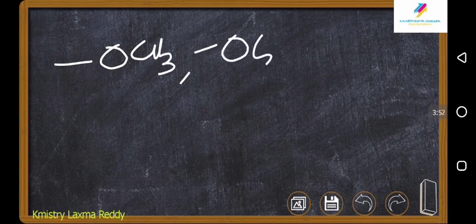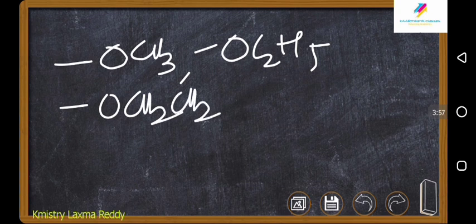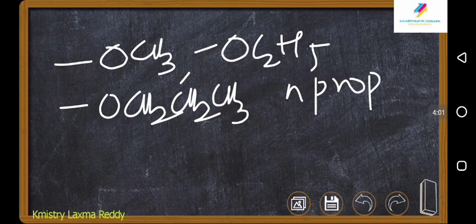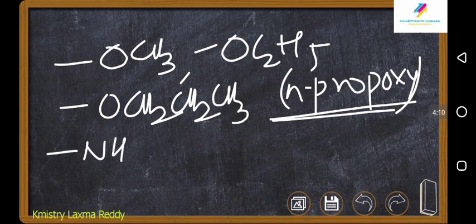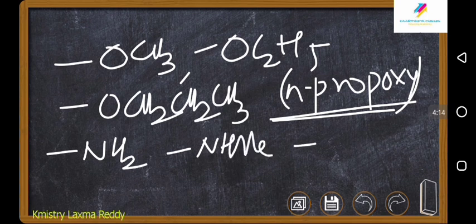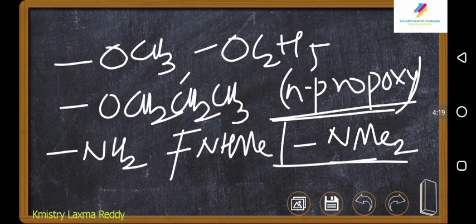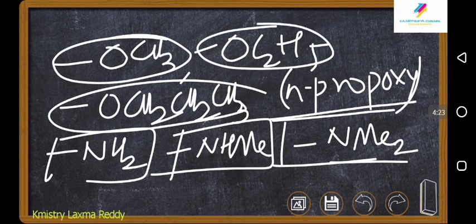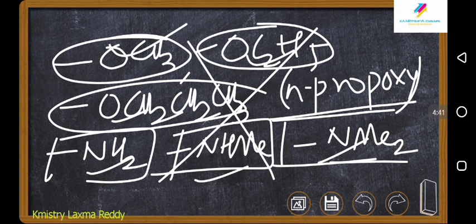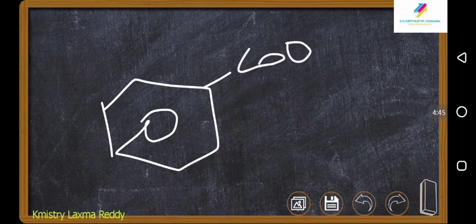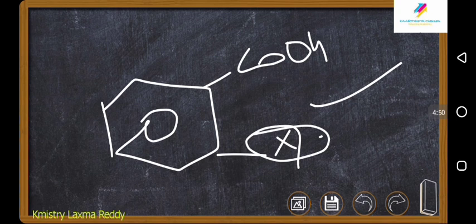So this is the ortho effect. Remember, OCH3, OCH2H5, OCH2CH2CH3 (n-propoxy), ethoxy, methoxy, n-propoxy groups — along with NH2, NH-Me (methylamine), and NMe2 (dimethylamine) groups — these are the exceptions. Except these groups, if any other group is at ortho position, the acidic nature definitely increases. Except these, blindly remember: if COOH is there and something is at ortho position X, this is more acidic because of the ortho effect. Ka value is more and pKa value is less — that is a strong acid. Strength of acids you can say in terms of Ka and pKa: when Ka is more and pKa is less, the acid is a strong acid.